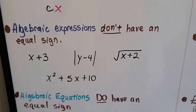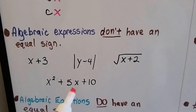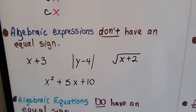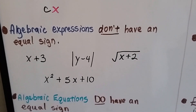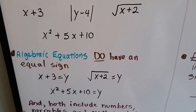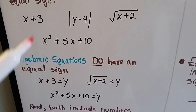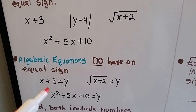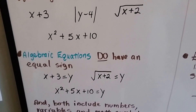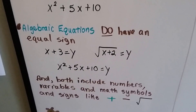Algebraic expressions don't have an equal sign. These four represent different algebraic expressions, but you'll notice there's no equal sign. Algebraic equations do have an equal sign — it's just the same as these, except now they have an equal sign. There are equal signs in the equations.